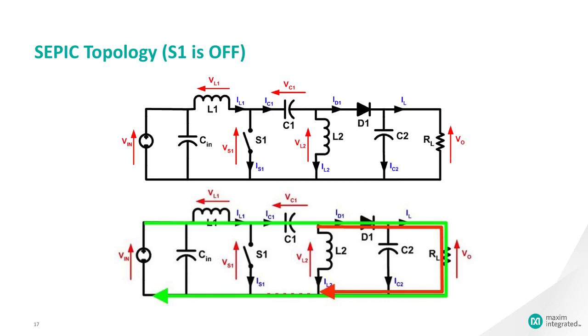Using Kirchhoff's current law, it can be shown that ID1 equals IC1 minus IL2. It can then be concluded that while S1 is off, power is delivered to the load from both L2 and L1.